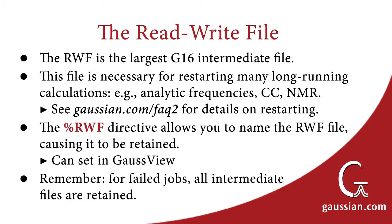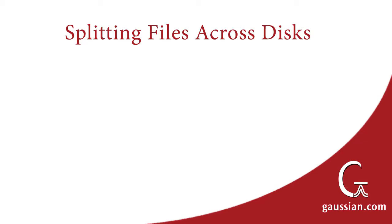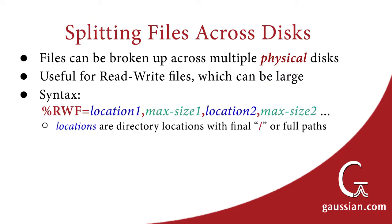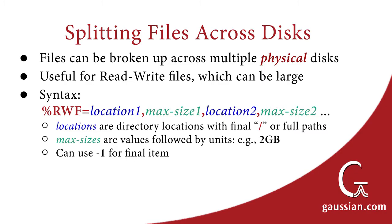Since intermediate files, and especially the read-write file, can sometimes be very large, combining available space from more than one disk can be helpful on systems with limited disk resources. When the Link0 command's value is a list, the corresponding intermediate file is broken into pieces if necessary, with file segments stored using each list item in turn. Note that the segments should all be located on different physical disks. Each location in the list is followed by a value specifying that segment's maximum size, for example 4 GB. The special value .rwf-1 can be used for the final item to let Gaussian determine the size.